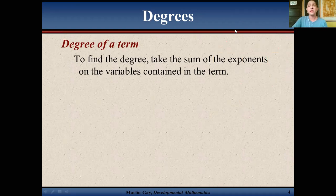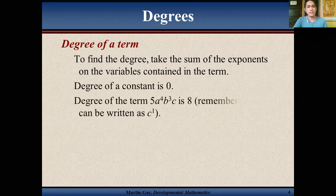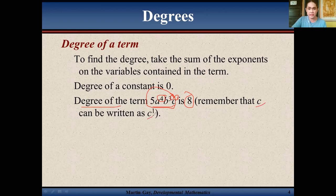In the degree of a term, you take the sum of all exponents of the variables in that term. The degree of a constant is 0 — do not forget. For the term 5a⁴b³c¹, you add the exponents: 4 plus 3 plus 1 equals 8. So 8 is the degree of that term. Remember that c can be written as c to the power of 1.